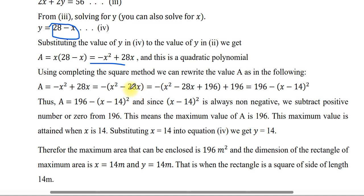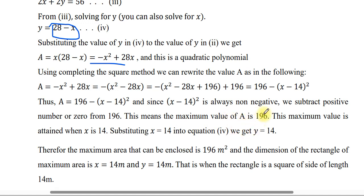A = negative X squared + 28X = negative(X squared minus 28X). Completing the square: A = 196 minus (X minus 14) squared. Since (X minus 14) squared is always positive or zero, we subtract a positive number or zero from 196.